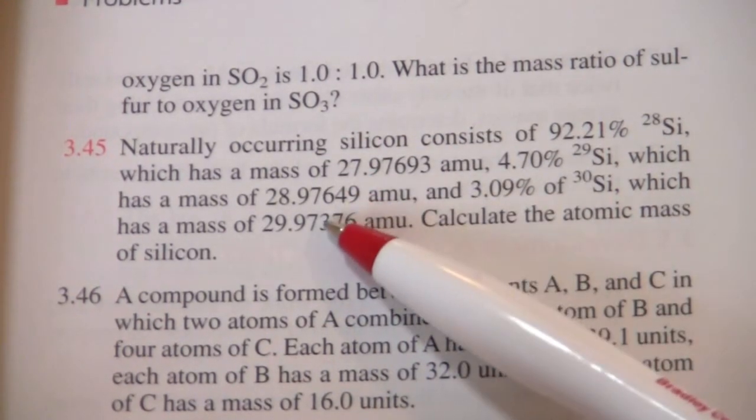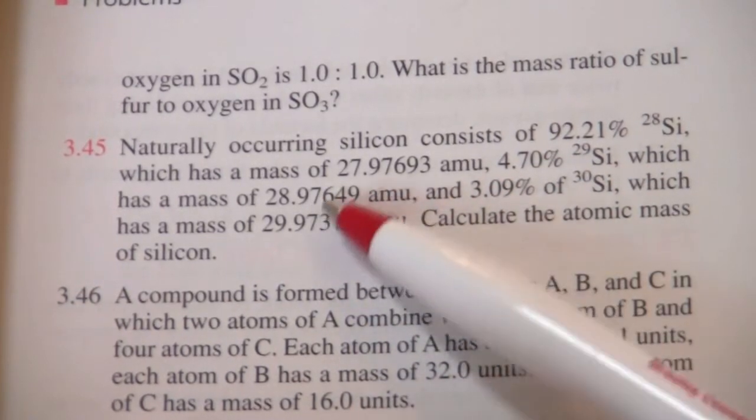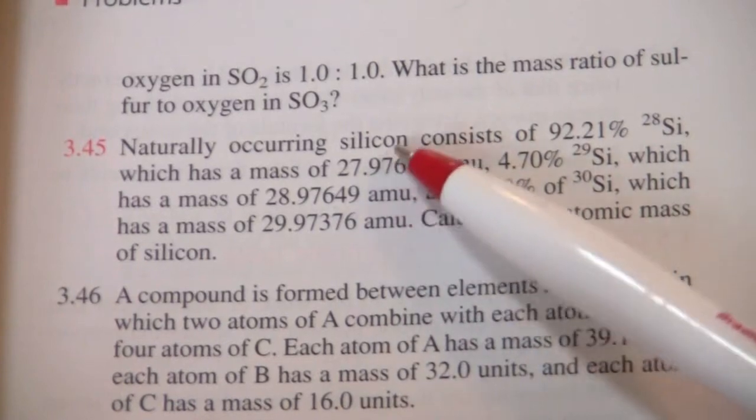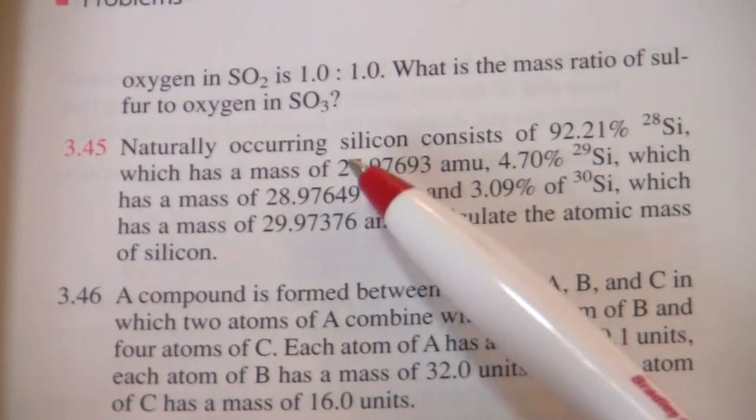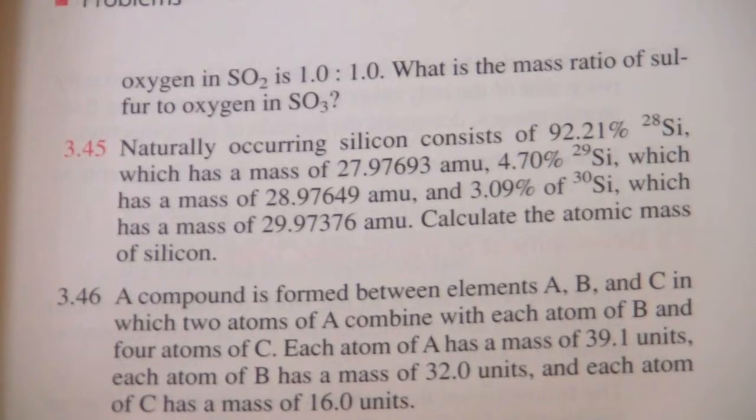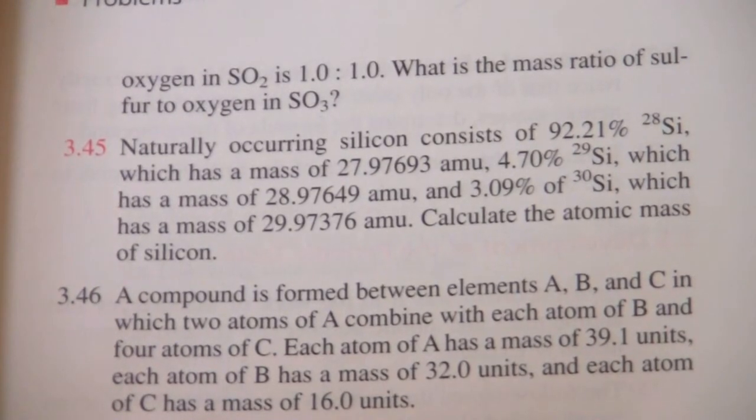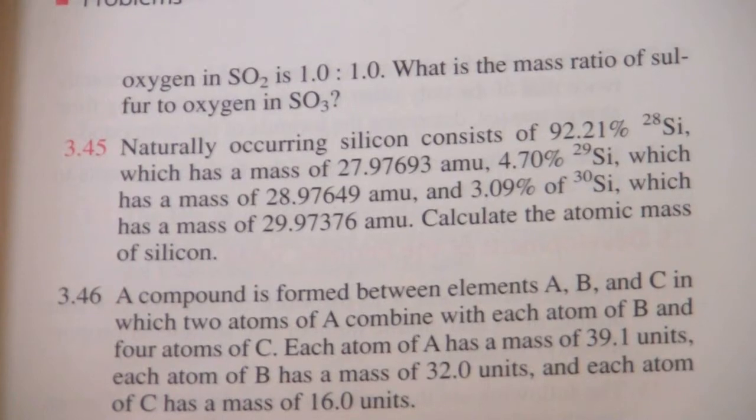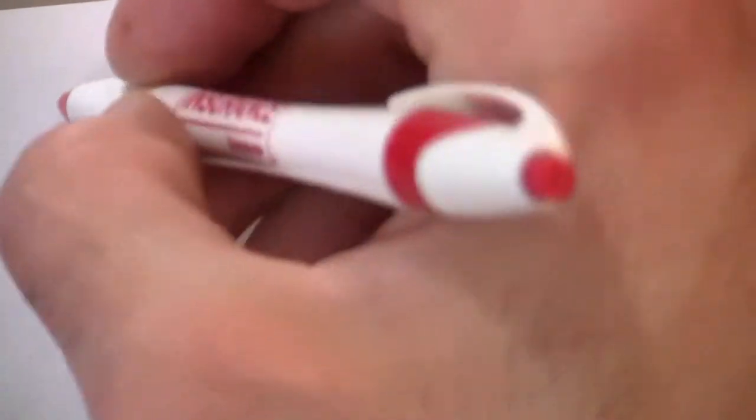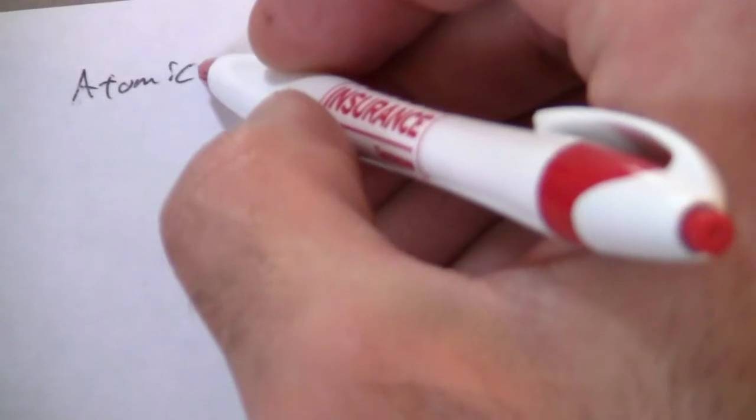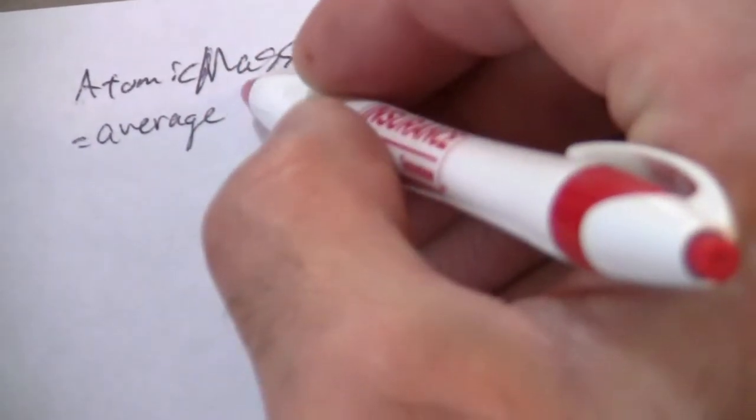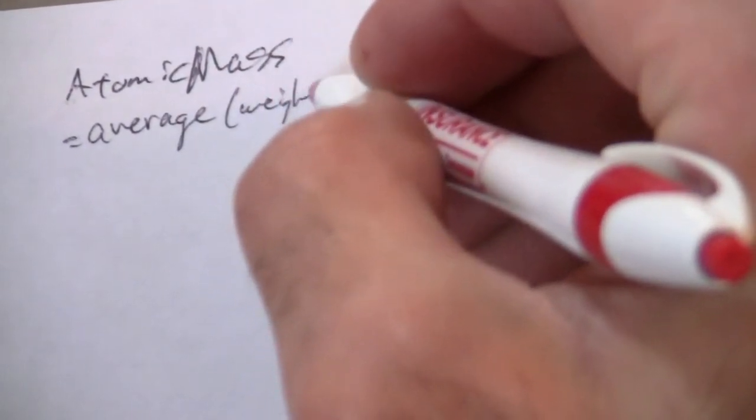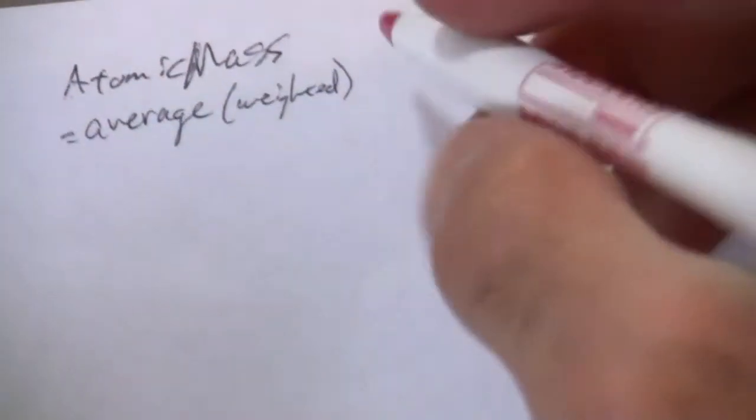But then there's a little bit of these heavier isotopes also, so that will increase the weight of the average by a little bit. So let's set this up. And the way we're going to do that is to realize that our average is the atomic mass. So the atomic mass, that is the average, the weighted average according to the abundances that we just looked at.